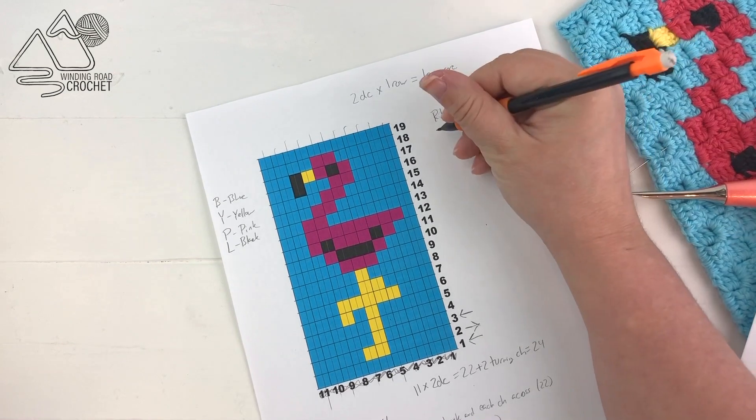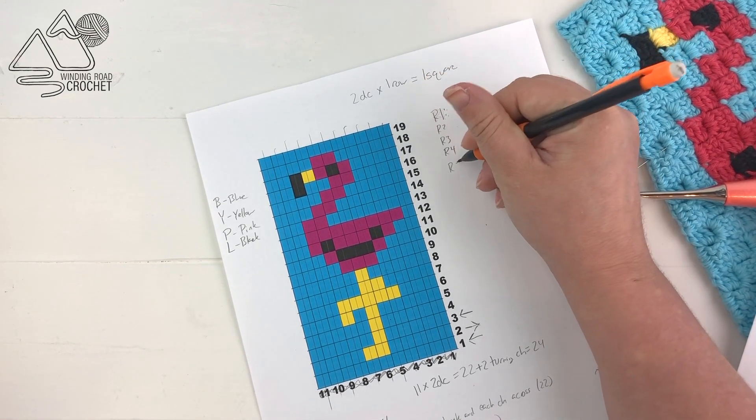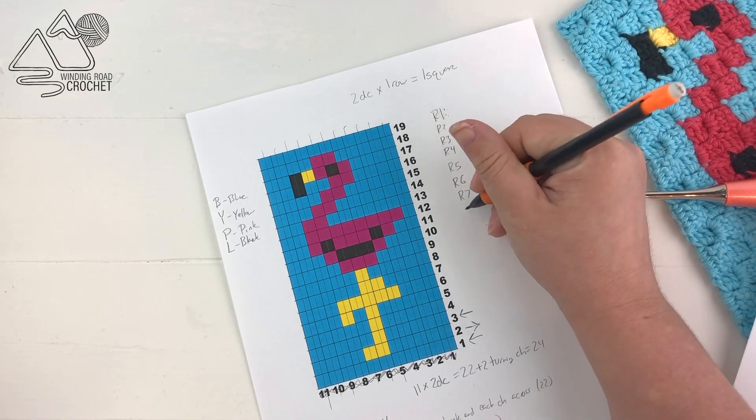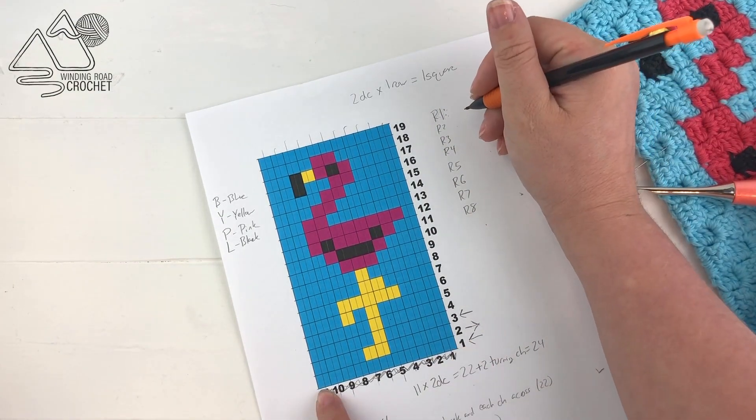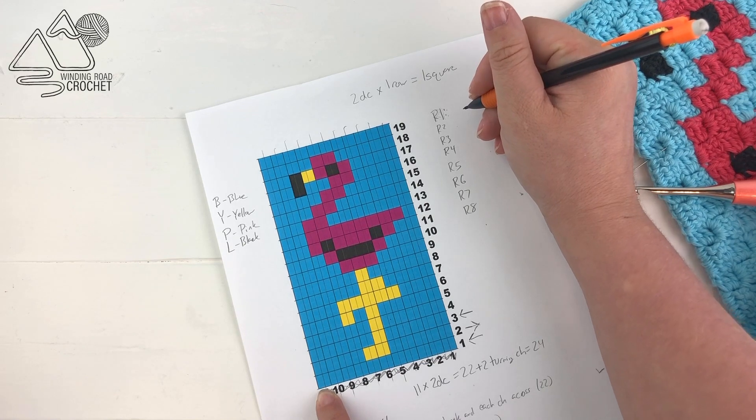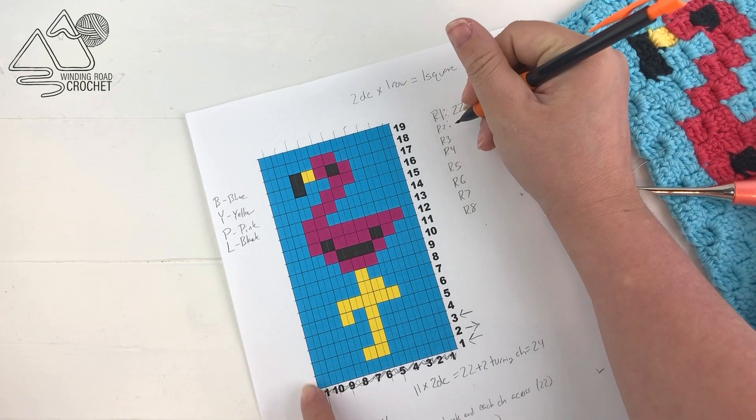So if you look at row one, you'll see that it's all blue, it's down at the bottom. Remember we're working bottom to top. And I'm going to go ahead and write out a few of my rows to make this easier so we can move through it a little faster. So starting with row one, row one is all blue, so I'm going to put 22B for all blue.